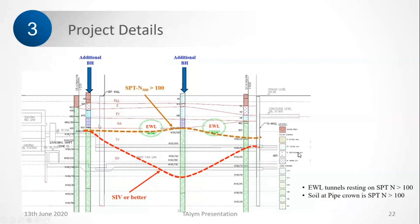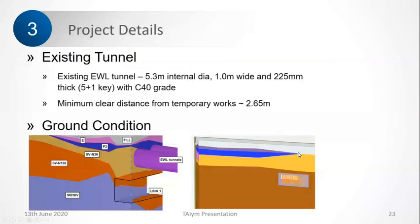As I was saying, the soil at the tunnel level has an N value of more than 100. In order to proceed, we had to do a detailed 3D numerical model because it's considered a high risk excavation. We needed to understand the impact and how changes in excavation sequences can lead to different movements or settlements.